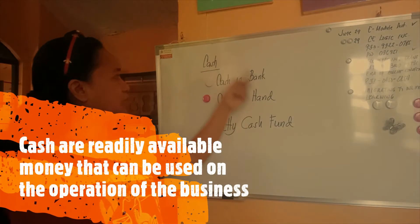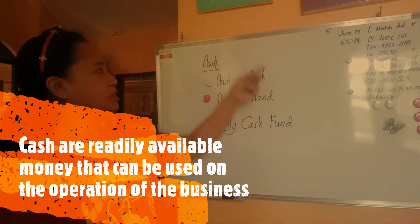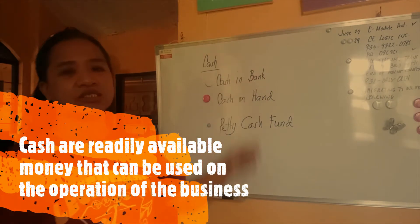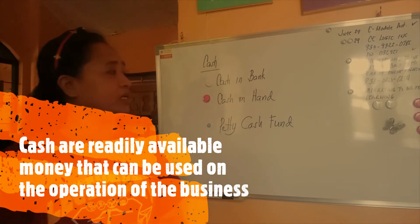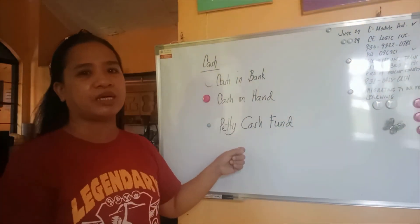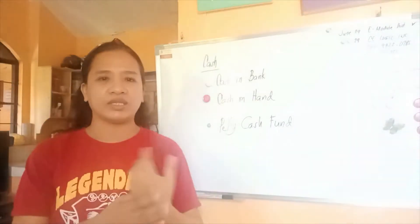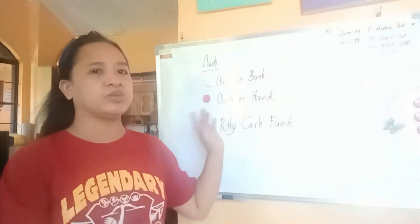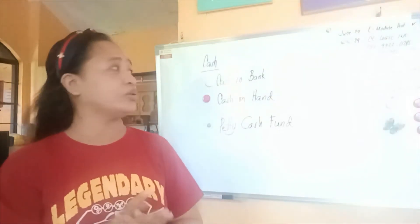Let's start with the cash component. We have cash in bank, cash on hand, and petty cash fund. What are the differences between the three?